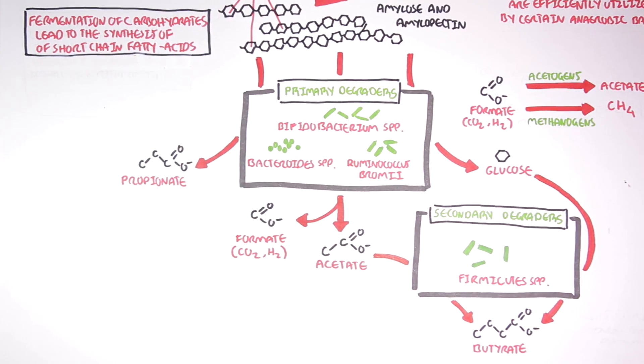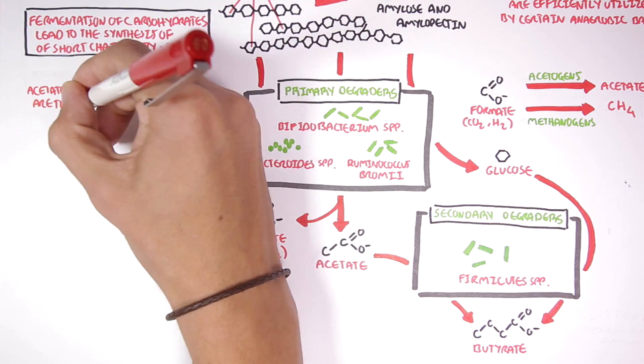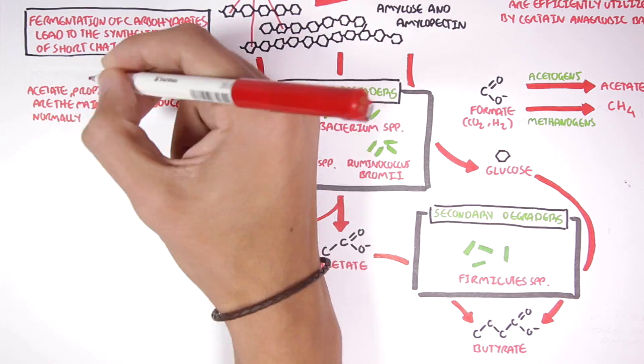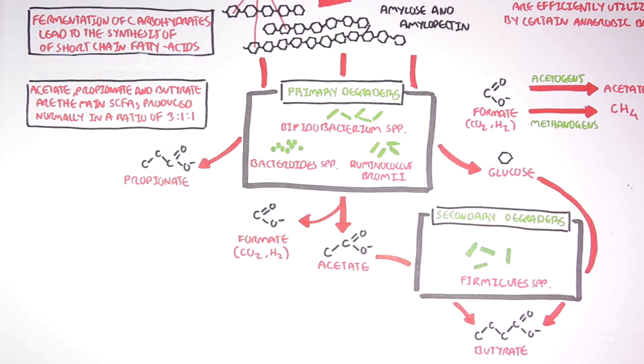So, through the fermentation of starch, acetate, propionate, and butyrate are the main short-chain fatty acids produced, normally in a 3-to-1-to-1 ratio, so more acetate being produced.